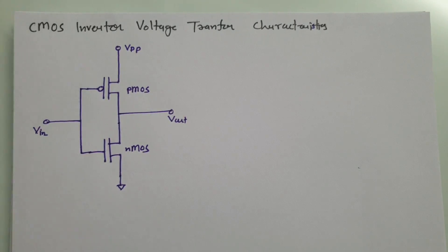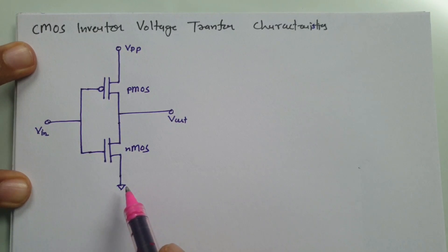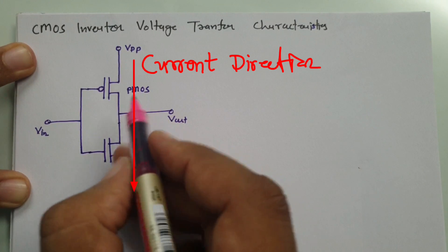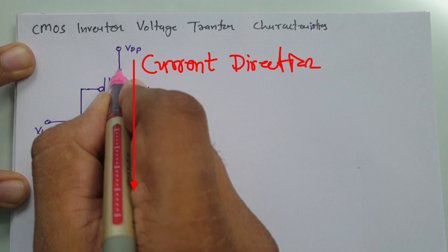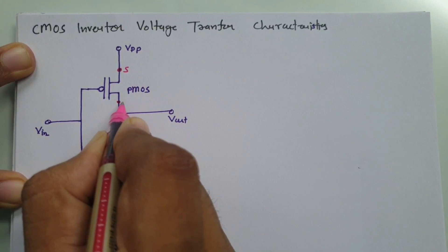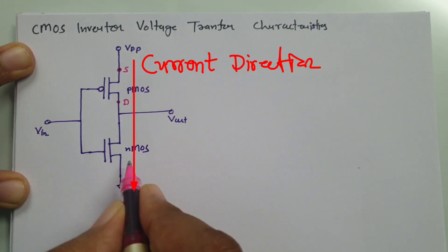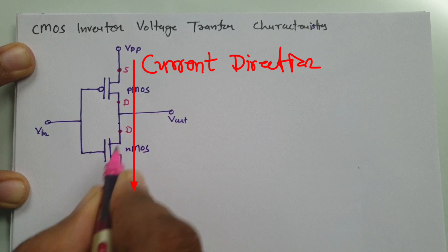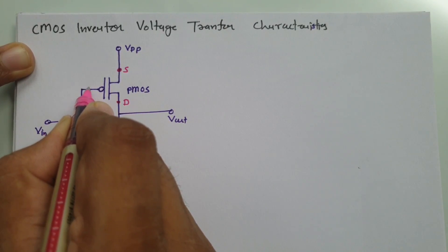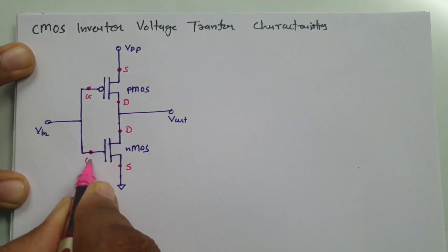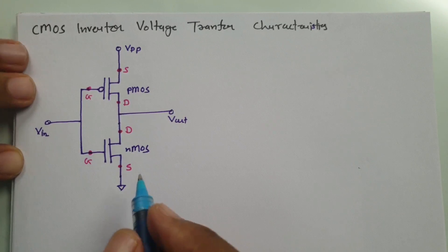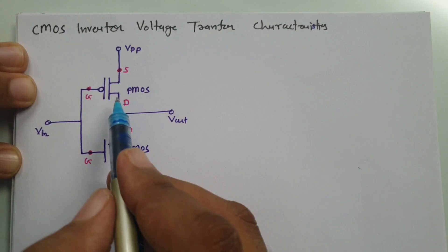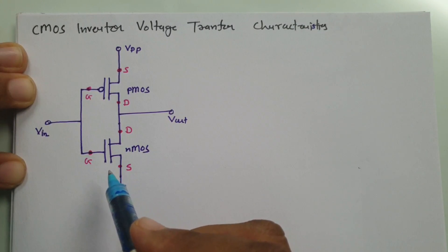Now, current will flow from VDD to ground. In PMOS, current flows from source to drain, so the source terminal is at VDD and the drain terminal is below. There are a few important points to note. When we talk about voltage transfer characteristics, we need to understand the different regions of operation of NMOS and PMOS, and the important voltages: VGSN and VDSN for NMOS, and VGSP and VDSP for PMOS.